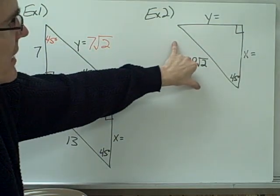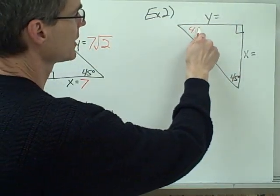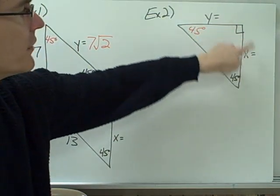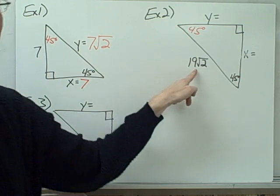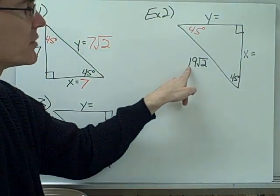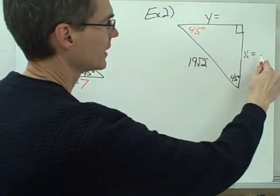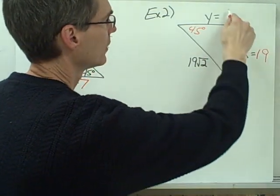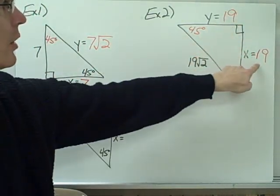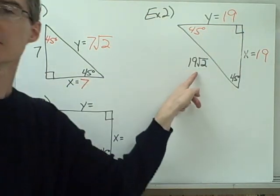Example 2: I have another 45-45-90 triangle, but now I'm given the length of the hypotenuse instead of a leg. The hypotenuse is 19√2. I can go backwards: since the hypotenuse is 19√2, each leg must be 19. Using the ratio 1 to 1 to √2, we get 19 to 19 to 19√2.